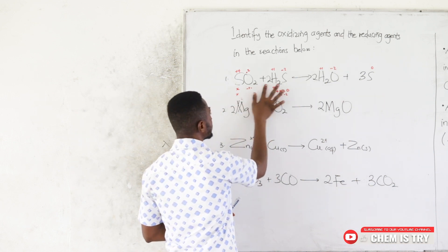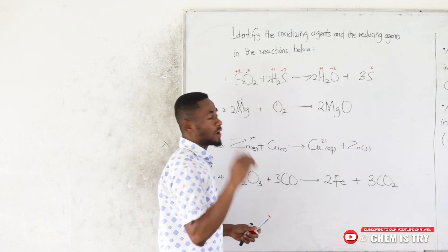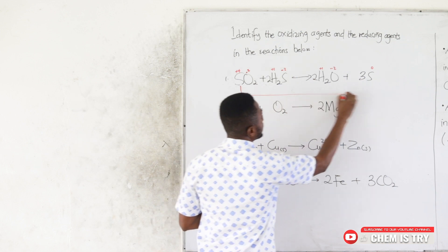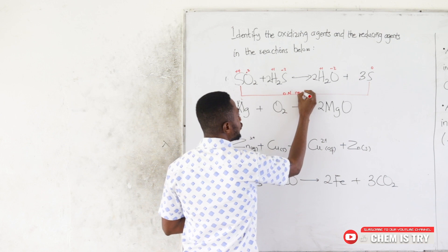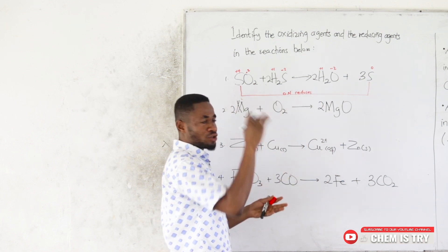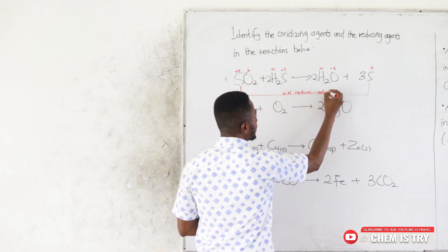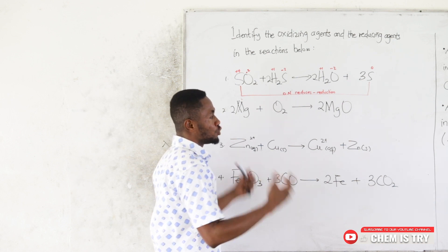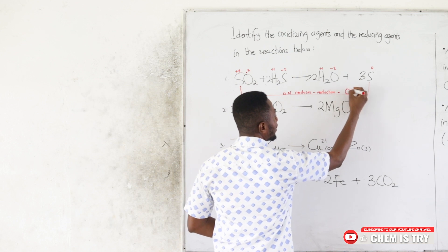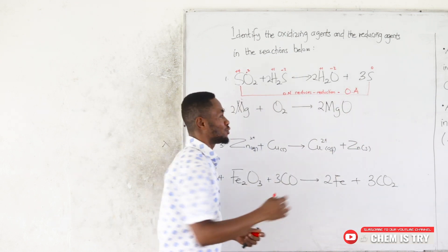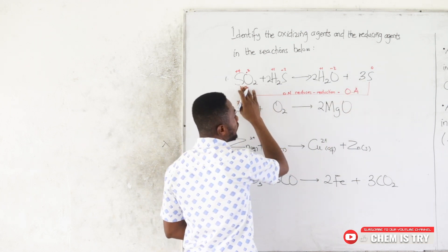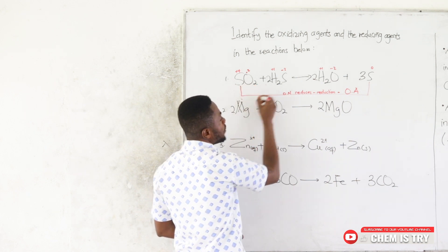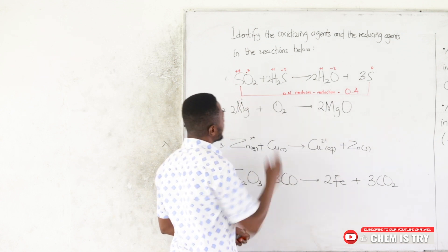Now let's check what's happening to the oxidation numbers. Sulfur in SO₂ has an oxidation number of +4 on the reactant side, and on the product side its oxidation number decreases to 0. When an oxidation number decreases, we say the substance has undergone reduction. So sulfur in SO₂ is being reduced, meaning SO₂ is our oxidizing agent (OA).